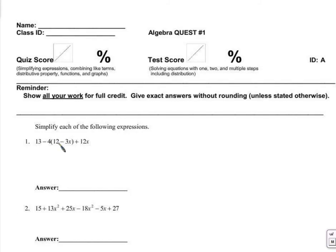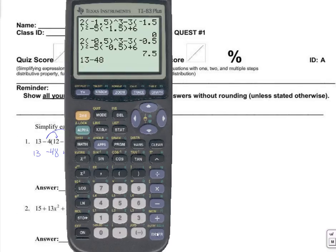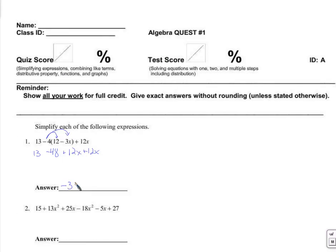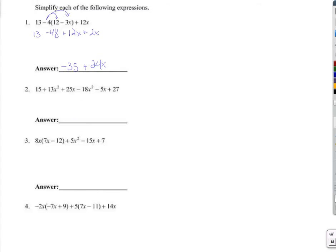Here we go. We have just a simplification problem. We can tell we need to distribute something here, right, and find some like terms, put those together, put some constants together. So we're going to distribute this number right here. This number is a negative 4. We're going to get 13 minus 48 plus 12x plus 12x. Remember that negative times negative is positive. 13 minus 48, let's not mess around here. Negative 35 plus 24x. Alright, on to the next one.